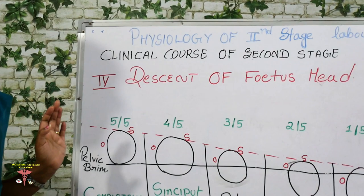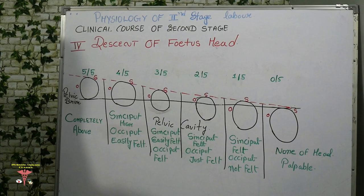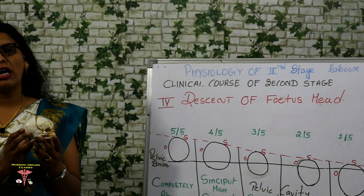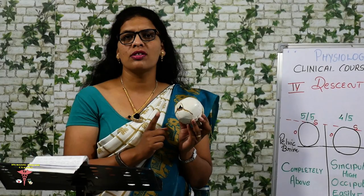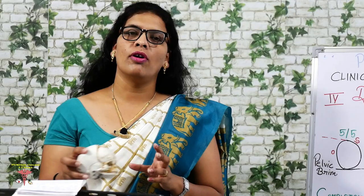The fourth and very important clinical course of the second stage of labour is descent of the fetal head. To understand this, you need to know all the parts of the fetal head — which is the occiput, which is the sinciput, and which is the diameter — as well as the pelvic brim.